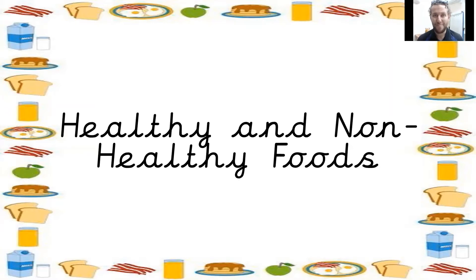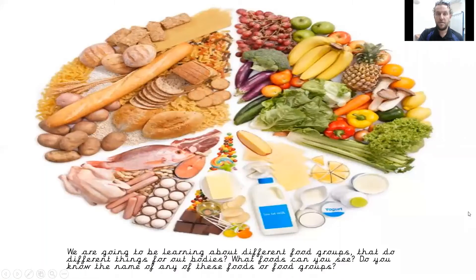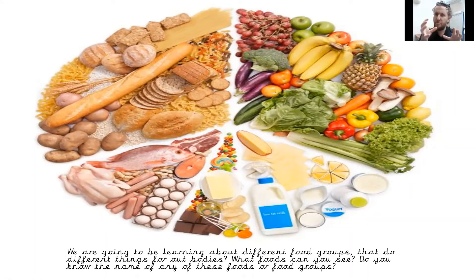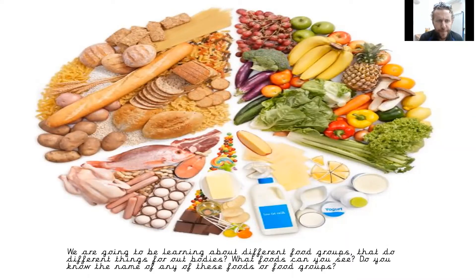Did you do that? Fantastic. Right, time for us to move on then. So this is supposed to look round like a plate, and on there you can see that there are different sections separated by the white lines in between. What food can you see in there? What sort of things can you see? Can you shout them out for me?